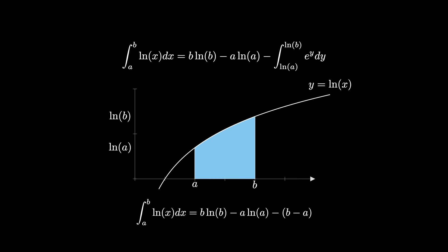Therefore the integral from a to b of natural log of x dx is equal to b times the natural log of b minus a times the natural log of a minus the quantity b minus a.